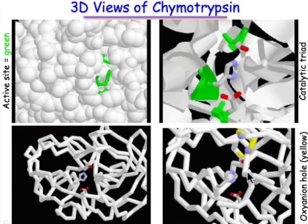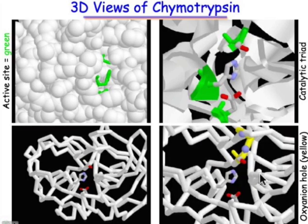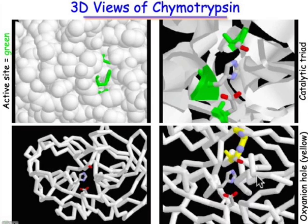Finally, we can spin that around and zoom in on it, looking at a couple of different orientations. What you can see is that protein scaffold of chymotrypsin is able to position very accurately those groups so that they're in just the right location to bind the substrate and to stabilize that intermediate.